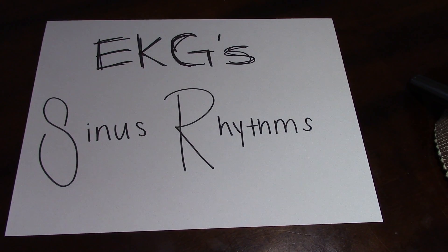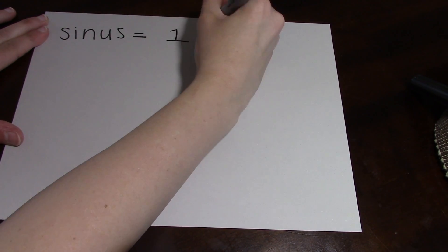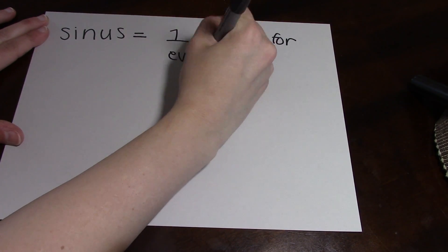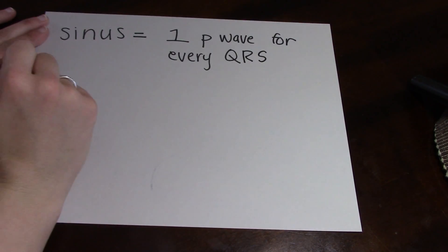Hi guys! So in today's video I'm going to be going over EKGs and the different sinus rhythms. To start off, it's important to know that sinus means that for every one P wave there is one QRS segment.